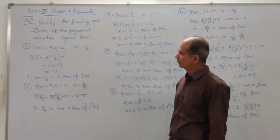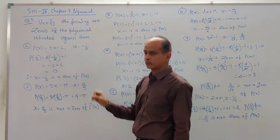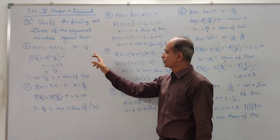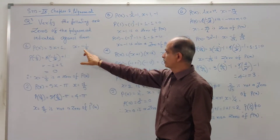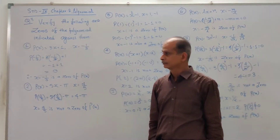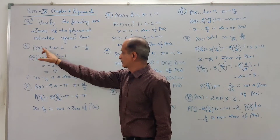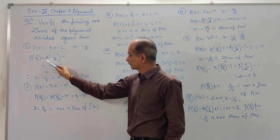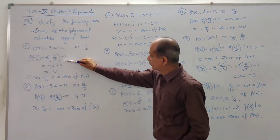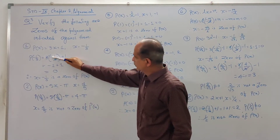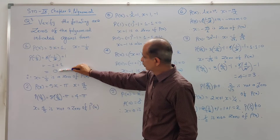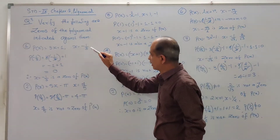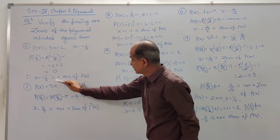Question number 3, first example: P(x) = 3x + 1 and the value of x is equal to -1/3. We have to check whether x = -1/3 is a zero of this polynomial or not. So in place of x, write down -1/3. You get -1 + 1 = 0. So P(-1/3) = 0, and that's why x = -1/3 is a zero of this polynomial.